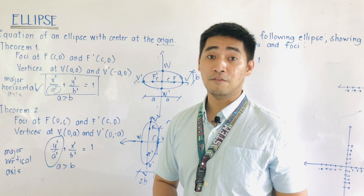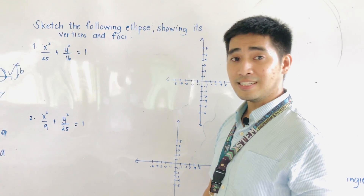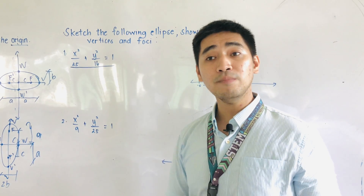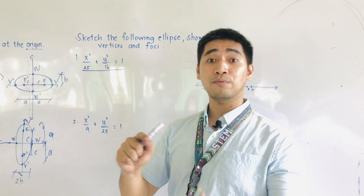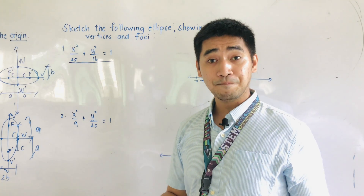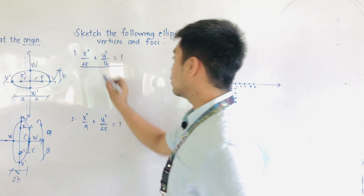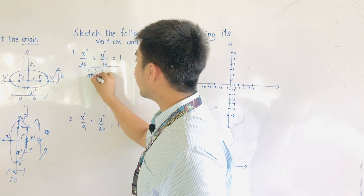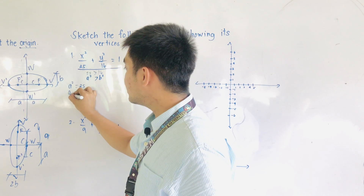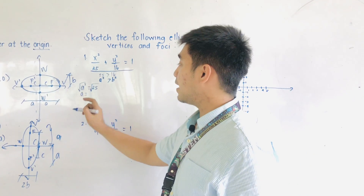Let's now work through some examples. For Problem 1, we need to sketch the ellipse showing its vertices and foci. The given equation is x² over 25 plus y² over 16 equals 1. Now, which is greater — 25 or 16? It's 25. Therefore, 25 is our A² and 16 is our B². Writing the given: A² = 25, therefore A = ±5.